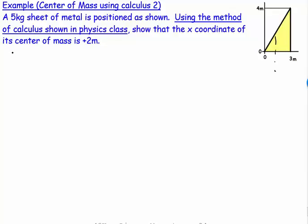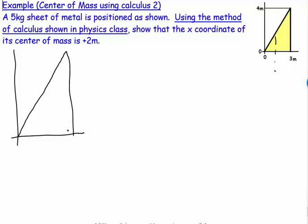Let's redraw the diagram — the given diagrams are never big enough and the angles are often not correct. The triangle extends three meters in the x direction and four meters in the y direction. We're only interested in the x coordinate, so we'll work out distances along the x axis.